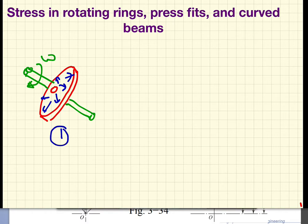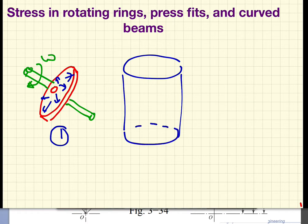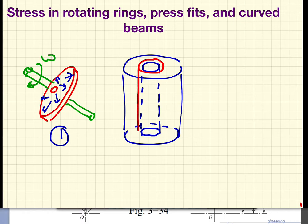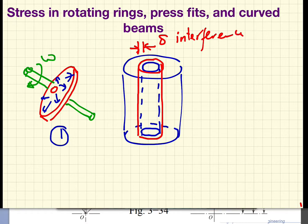Application two is press fit. In this case we have one cylinder with an inside radius that is smaller than the outside radius of a second cylinder, so we press the second cylinder onto the first one. There is a delta, called the interference, which is a displacement that must be accommodated when the inside cylinder is inserted into the outside cylinder.